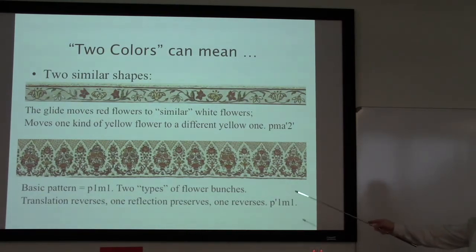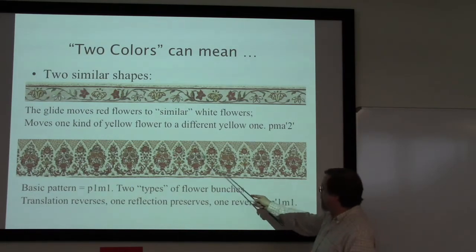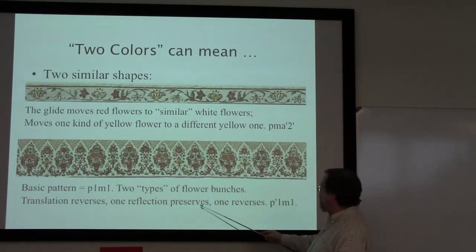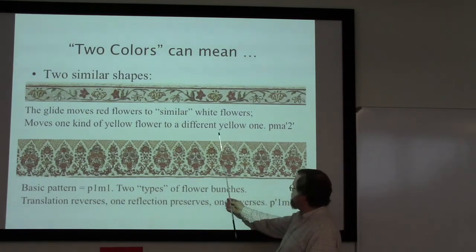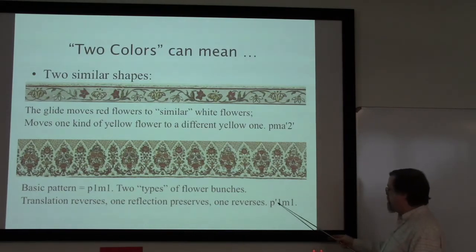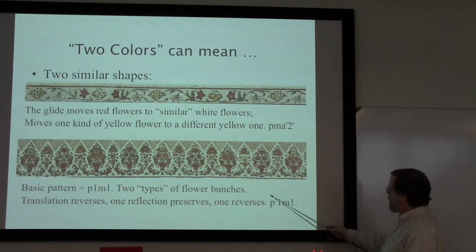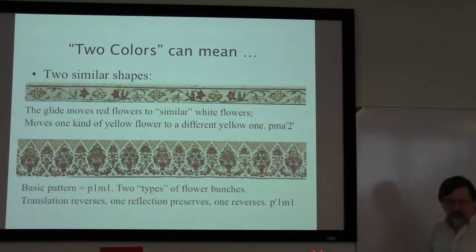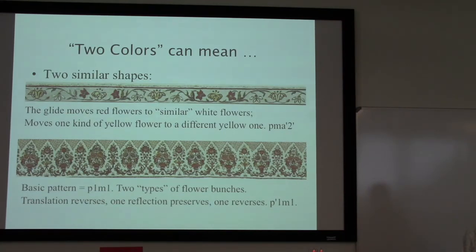The translation reverses colors from here to here, this reflection preserves, and that one reverses. So this would be p prime m11. My apologies for the mistake there. That means I have to forgive you for at least some mistakes you might make, as long as you don't make too many.